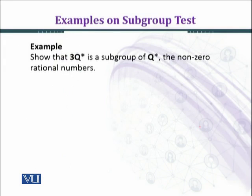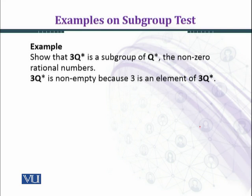the nonzero rational numbers. First we have to see whether 3Q* is non-empty. As you know, in nonzero rational numbers, identity element 1 belongs to Q*, and when we multiply 3 by 1 we shall get 3, and it contains the element 3.